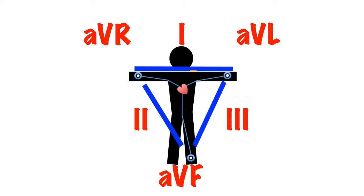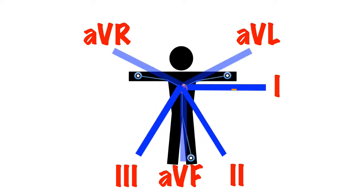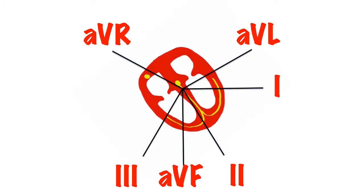These leads will look at the heart at the following angles or vectors. This may be a diagram that you're familiar with from your textbooks. As you may be able to see, this is why we like looking at lead two so much when monitoring ECGs, because the majority of the impulse in a normal heart should be travelling towards it, giving us the best general view.